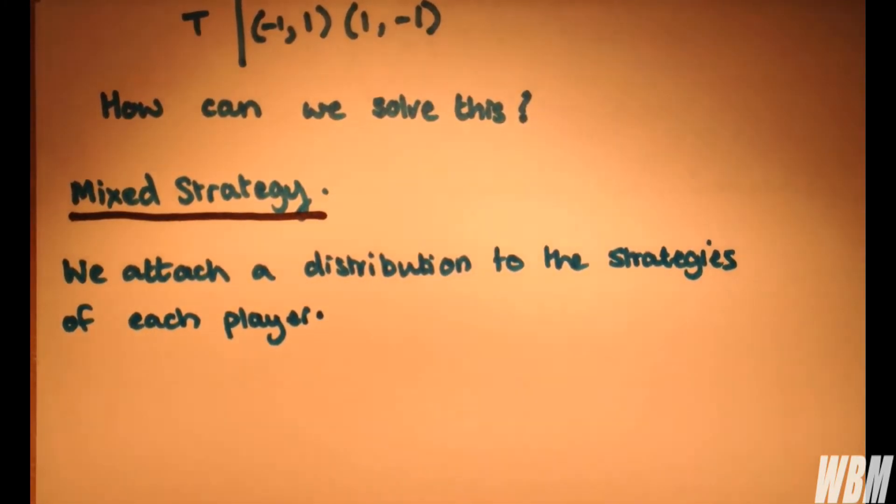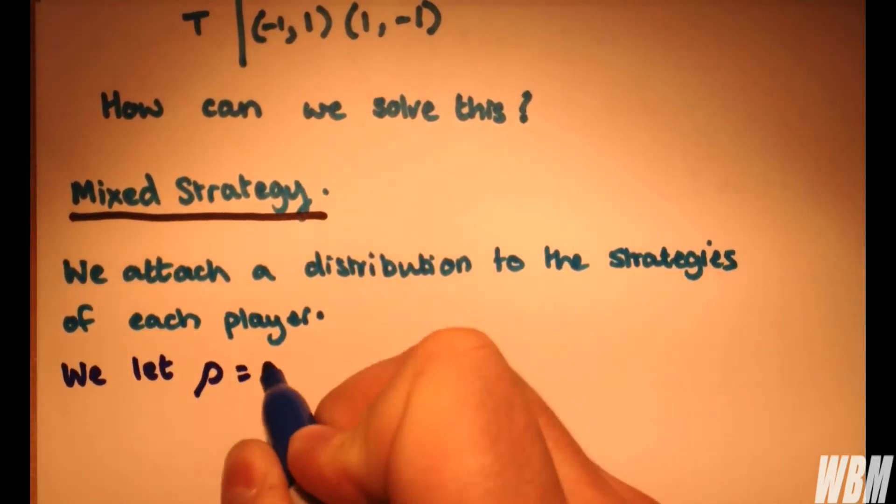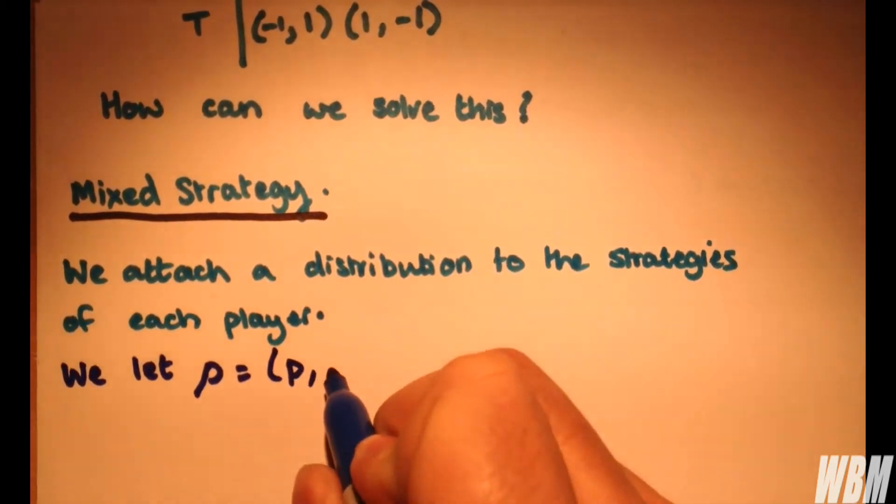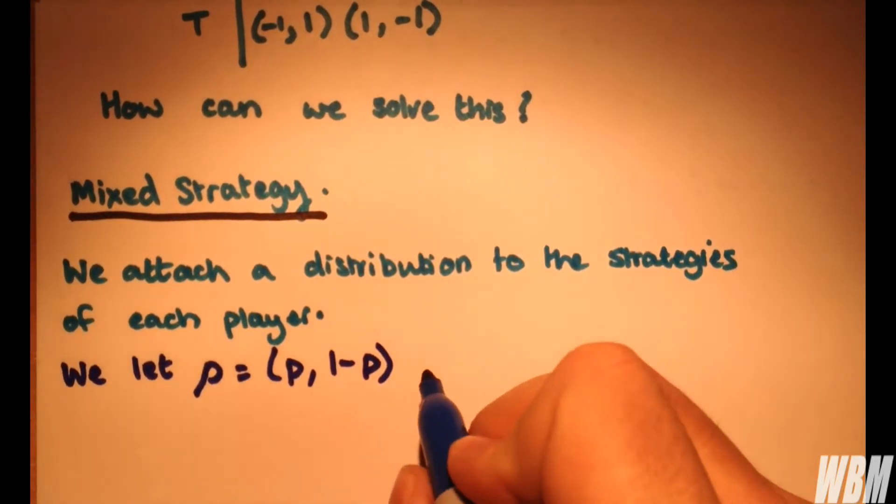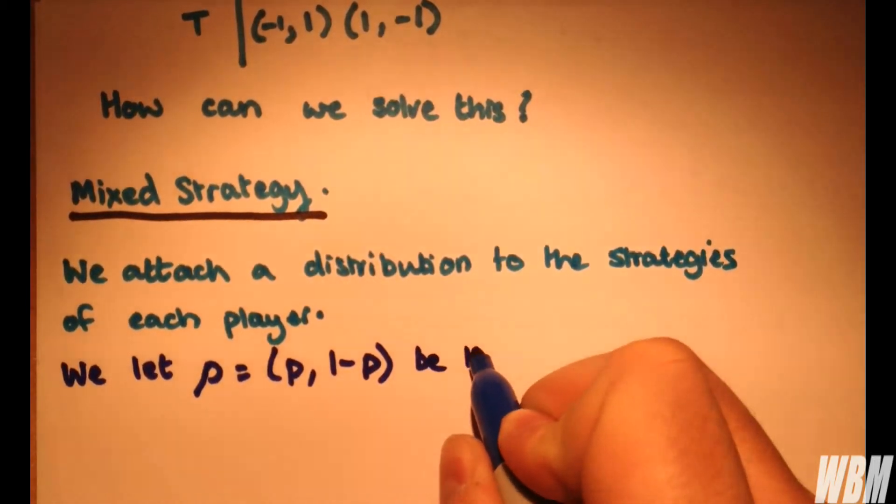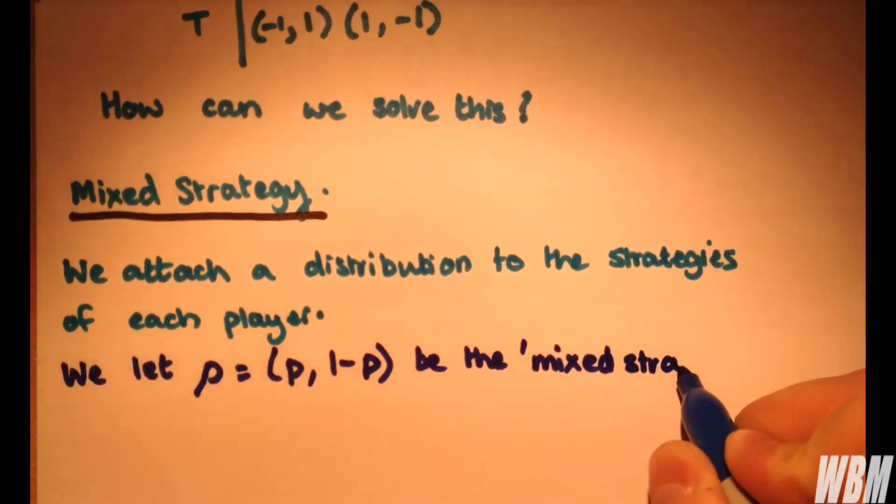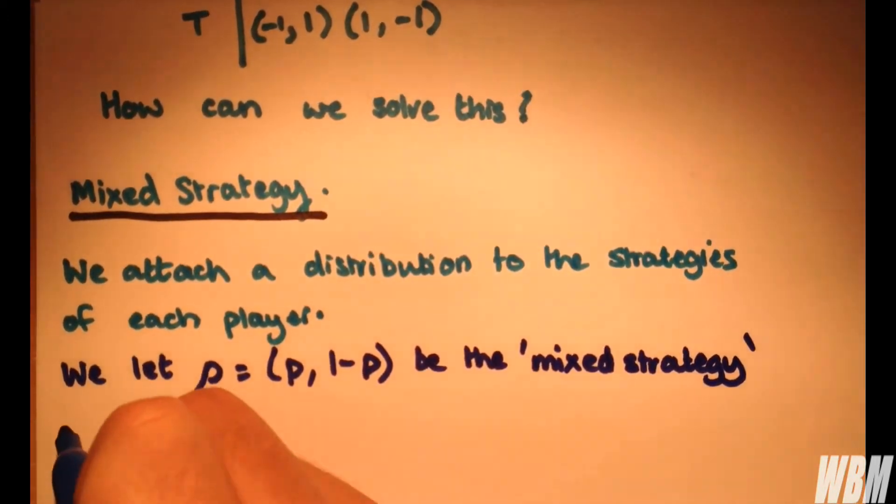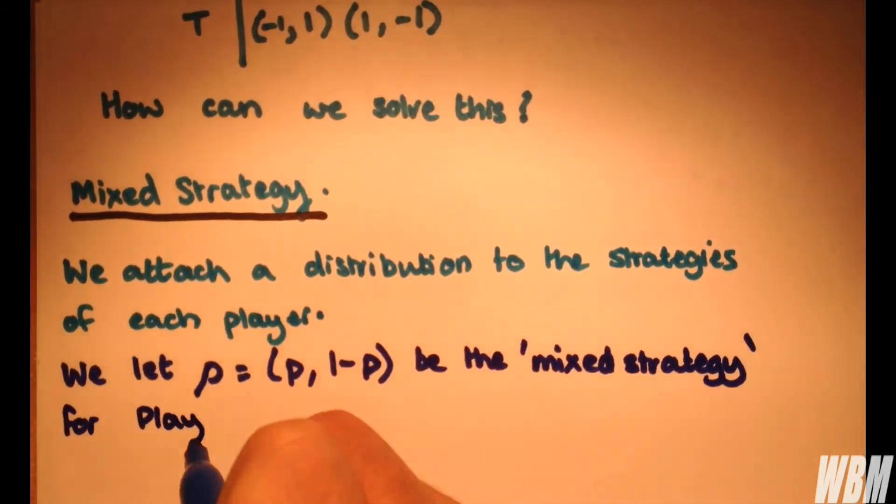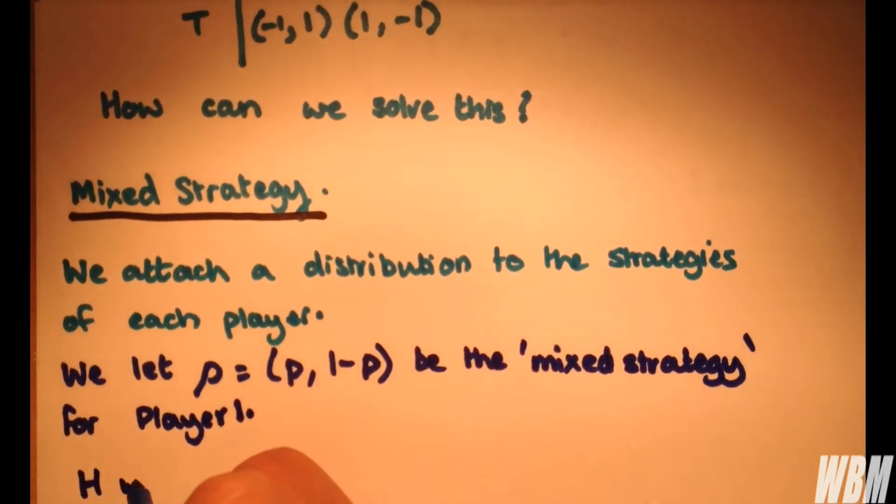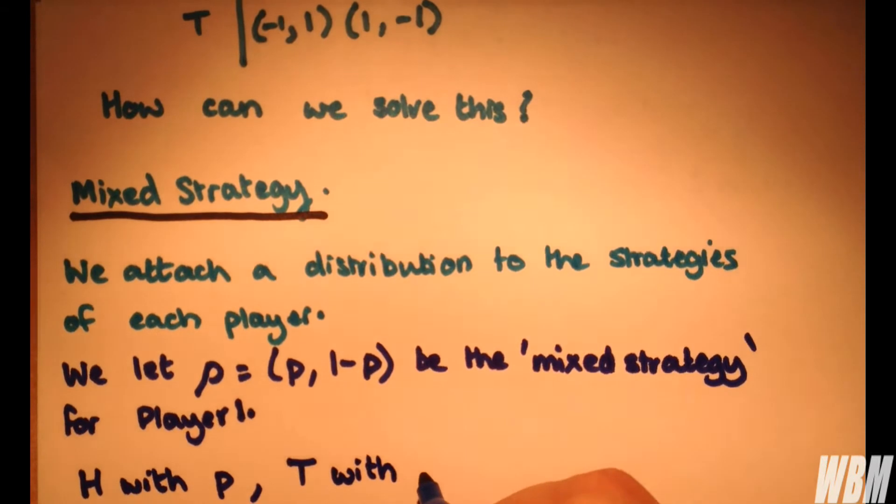For example, we will let ρ equal (p, 1-p), and we let this be the mixed strategy for player one. So we have player one will play heads with probability p and tails with probability one minus p. Now that's quite straightforward.